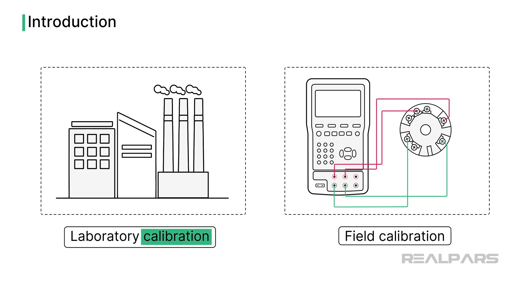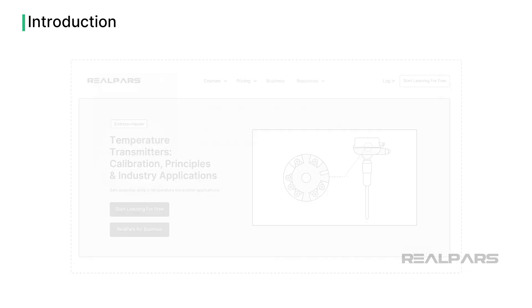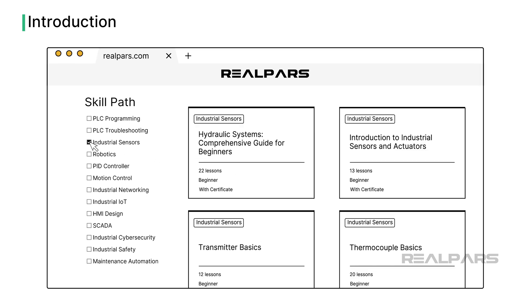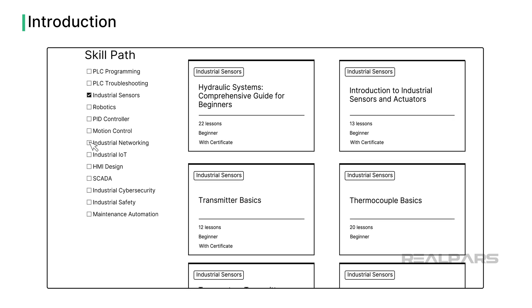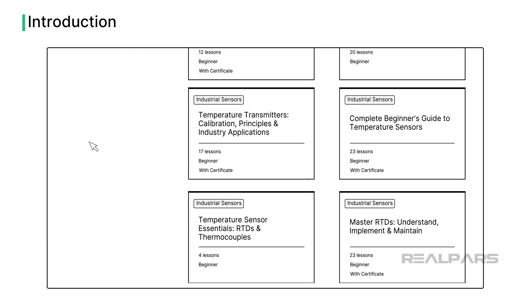If you want to learn more about this topic, I recommend the course Temperature Transmitters, Calibration, Principles, and Industry Applications. The certificate for this course comes from Endress and Hauser. And if you want to learn more about different topics related to industrial sensors, you can check out the RealPars course library and filter for this topic. You can find the links in the video description.